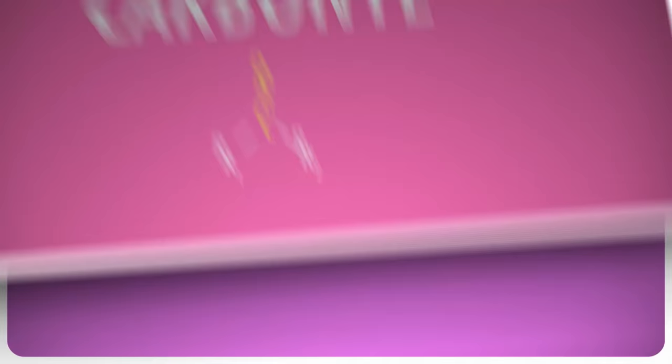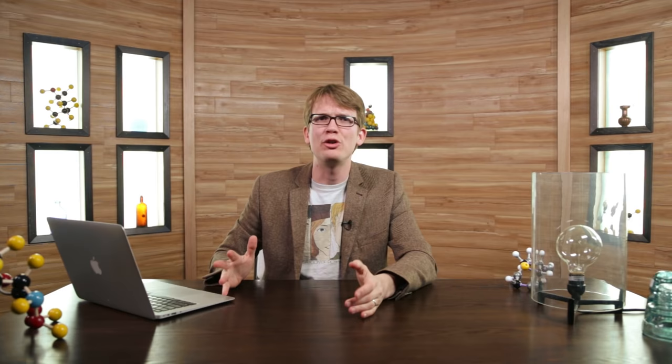Impending confusion alert! There can be functional groups inside of functional groups. We've already seen two of them. If an OH is part of a larger functional group, we refer to it as a hydroxyl, and if a carbon double bonded to an oxygen is part of a larger group, we call that a carbonyl. For example, if we have a carbonyl bonded to a hydroxyl, that, my friends, is a carboxylic acid. Hopefully you're getting the hang of the lingo.